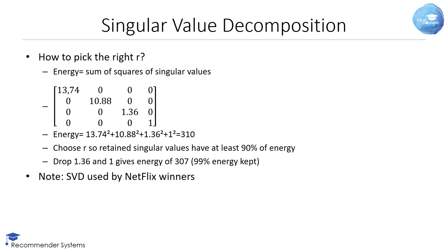A common rule of thumb then states that we choose R such that the retained singular values keep at least 90% of the energy. In other words, if we drop 1.36 and 1, the resulting energy is 307 such that we manage to keep 99% of the energy.